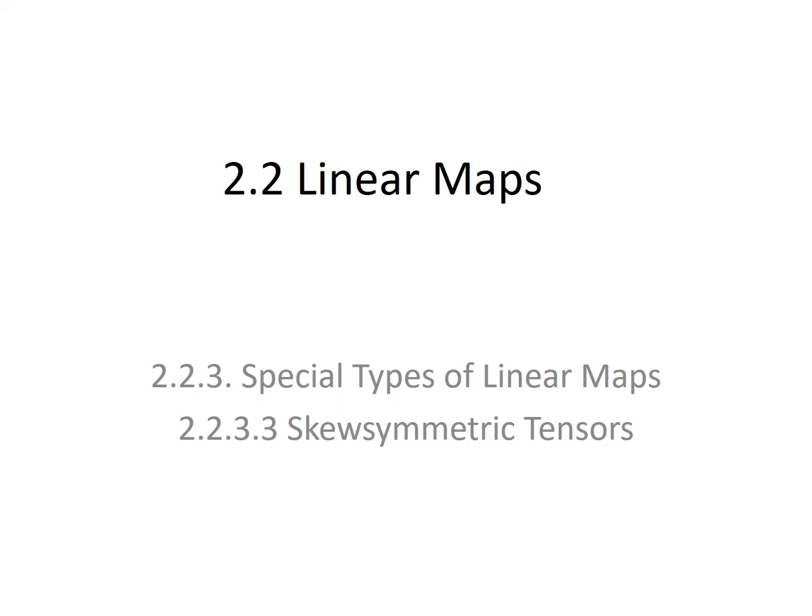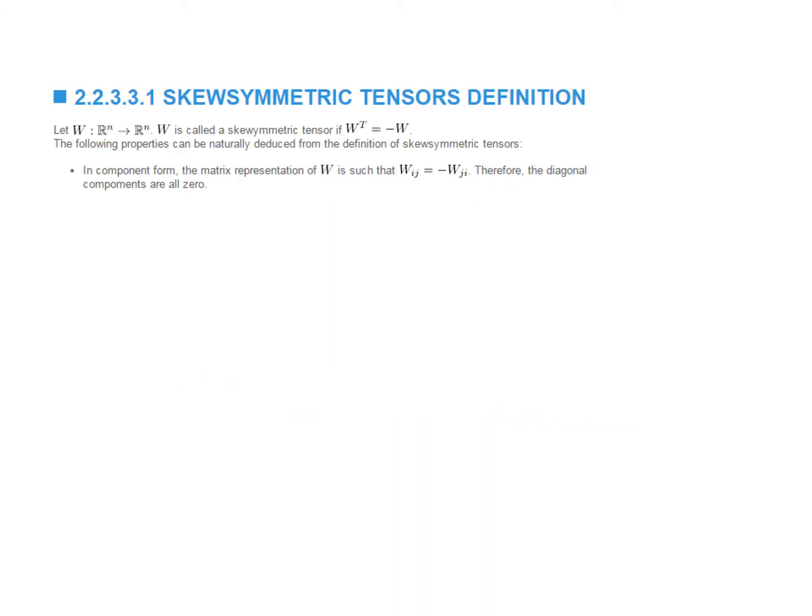In this video, we're going to present skew-symmetric tensors and we will pay special attention to skew-symmetric matrices in R3. A tensor W is called skew-symmetric if W transpose is equal to negative W. This right away implies that the diagonal components have to be equal to zero.